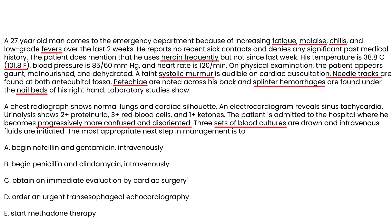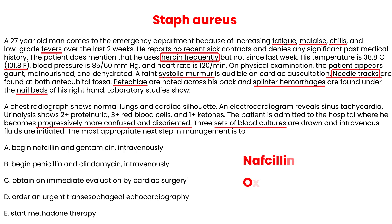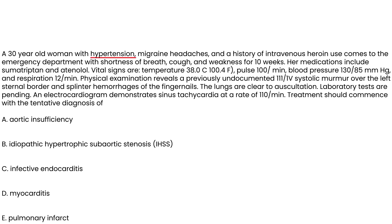This question points clearly to endocarditis. The patient is an IV drug user with needle tracks, so the most common causative organism is staph aureus, treated with anti-staph penicillins — nafcillin or oxacillin. The answer is to initiate antibiotic treatment immediately, because the patient is becoming progressively more confused and deteriorating. You don't want to wait until the cultures come back.